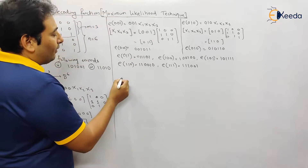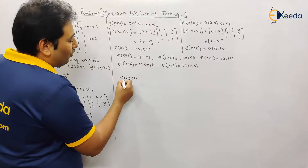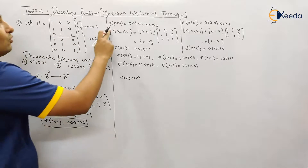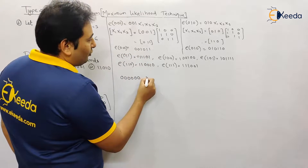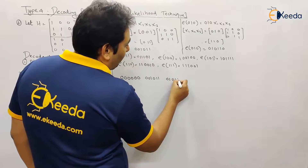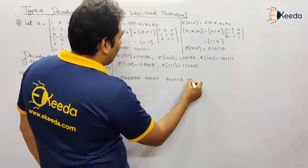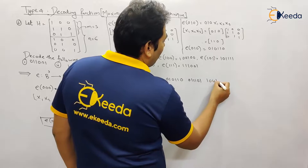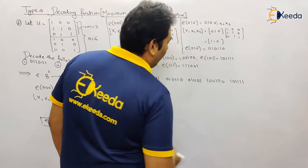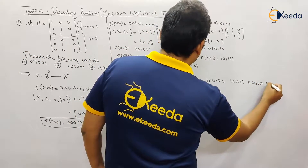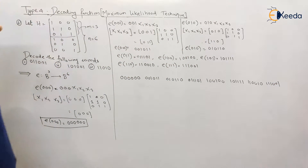For decoding, we make a table starting with six zeros, which is the code for e000. Next, the code for e001 is 001011. The next code for e010 is 110111. Next is e011: 011101. Then e100: 111010. Next is e101: 110010. Then e110: 001010. And finally e111: 111001. So these are the eight codes written on the board.